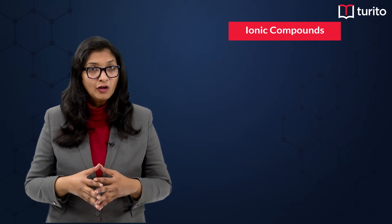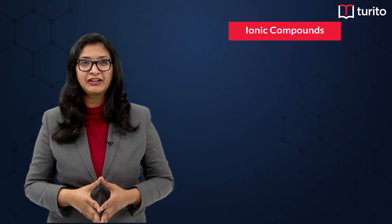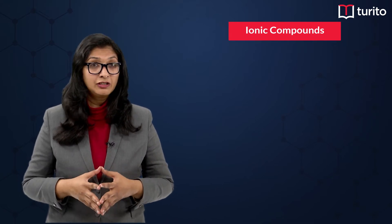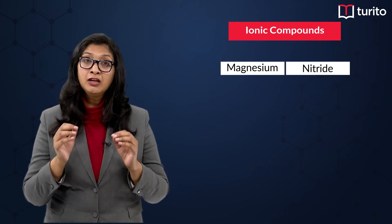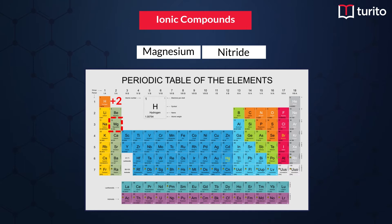We will focus only on the commonly seen elements — other elements can also form charged particles, but that is rare. As an example, let's take magnesium nitride. Magnesium (Mg) belongs to Group 2, so it has a +2 charge. 'Nitride' is another name for nitrogen when it acquires a negative charge — nitrogen belongs to Group 15, so nitride has a −3 charge.